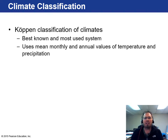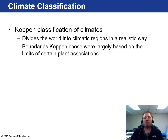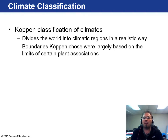The best-known classification scheme is called the Köppen classification scheme — it's the most used — and it uses mean monthly and annual values of temperature and precipitation to better describe the type of climate in a particular area. It divides the world into climatic regions in a realistic way. The boundaries were largely based on limits of certain plant associations, which makes sense — you're not going to have cacti growing in a jungle. They thrive in desert regions. So these plant associations help delineate between one type of climate and another.